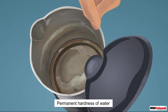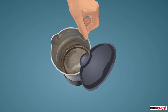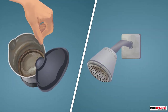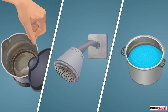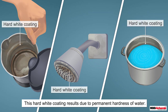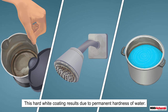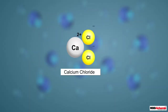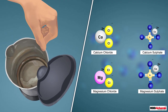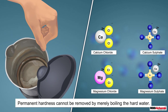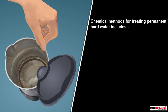Now let us learn about permanent hardness of water. You may have noticed a hard white coating inside electric kettles, on showers, and inside utensils in which water is boiled. This hard white coating results from permanent hardness. Permanent hardness is caused by the presence of chloride or sulfate salts of calcium and magnesium. It cannot be removed by merely boiling.